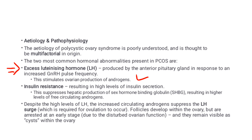Follicles develop within the ovaries but are arrested at an early stage due to disturbed ovarian function, and they remain visible as cysts within the ovaries. This is why in this condition, due to multiple arrested follicles at an early stage, cysts will be seen within the ovaries.